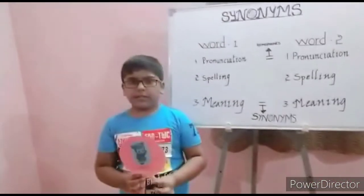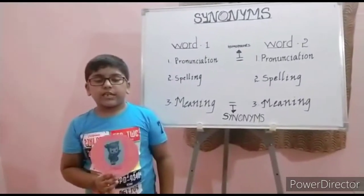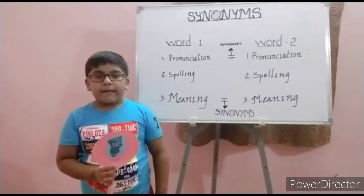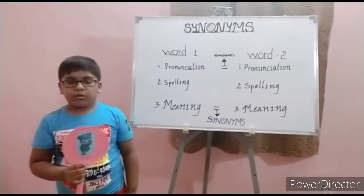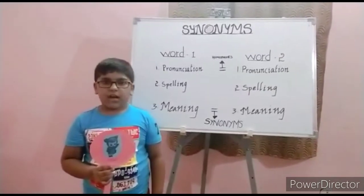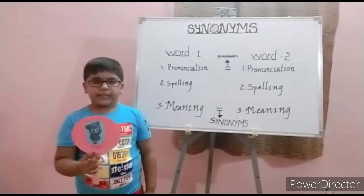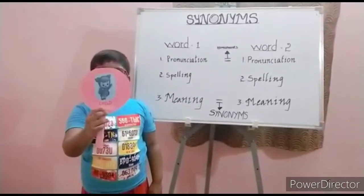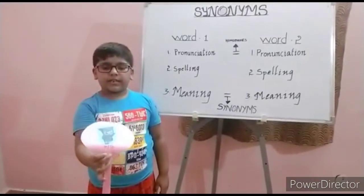This lollipop graphic shows same meaning — spelling and pronunciation are different. For example: child, kid.